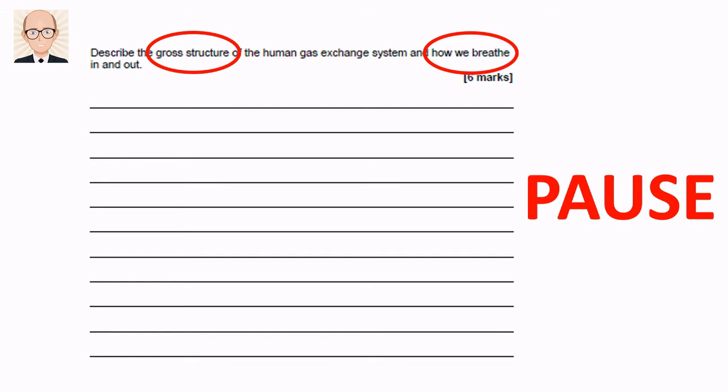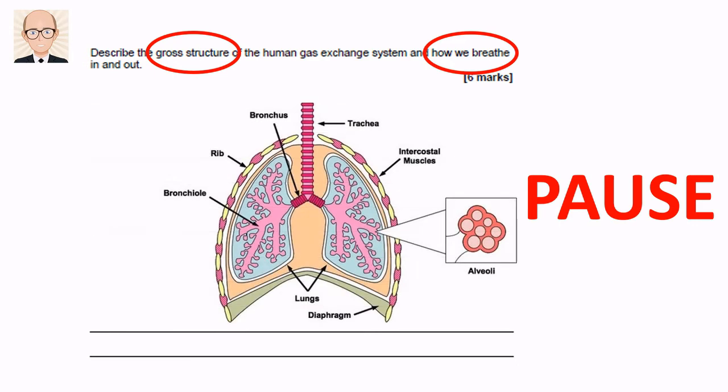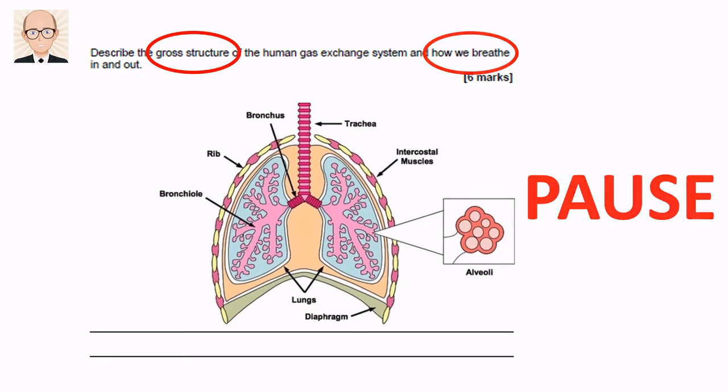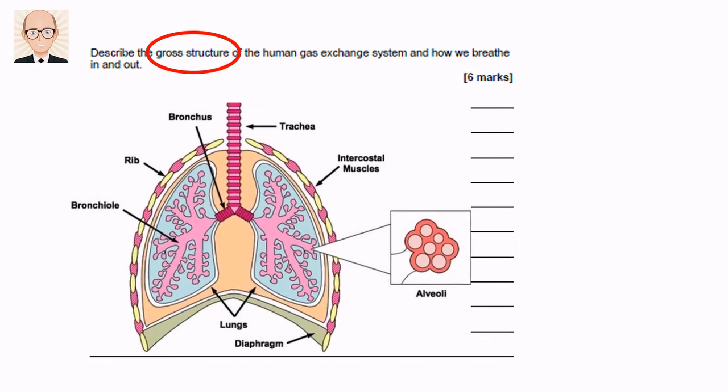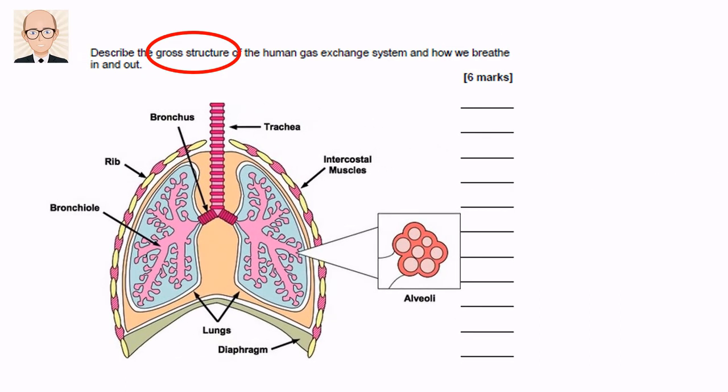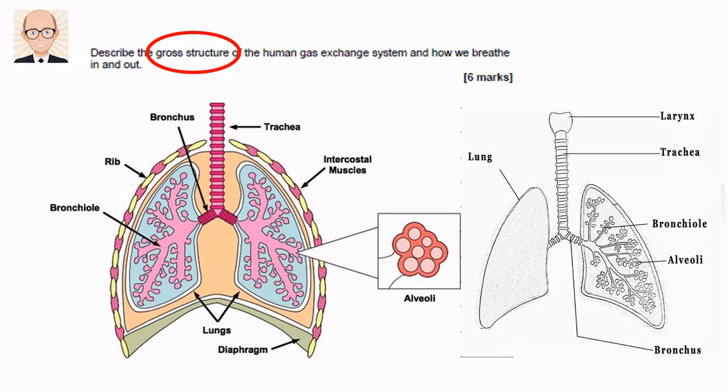Describing the structure of something is fairly straightforward. It's even easier if we simply draw a labelled diagram like this. A picture, after all, is worth 10,000 words. I know what you're thinking — you can't draw. What about this then?